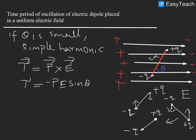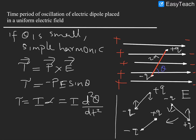In 11th, you studied one more equation: tau is equal to I alpha. We consider only the magnitude since we are finding the time period. This equation can be rewritten as I times d²θ/dt², because alpha is equal to d²θ/dt². Alpha is the angular acceleration — it is the second derivative of angular displacement theta.